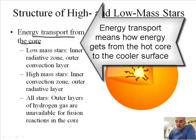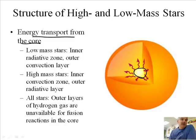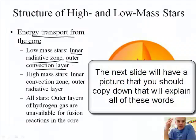Energy transport from the core. Where is all the heat in a star being generated? It's being generated in the core of a star. The heat's not being generated on the outside. It's just being moved on the outside. For a low-mass star, we have an inner radiative zone and an outer convection layer.